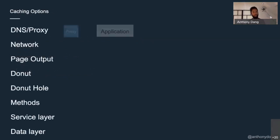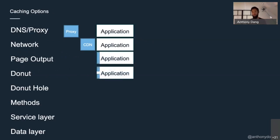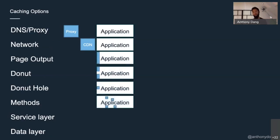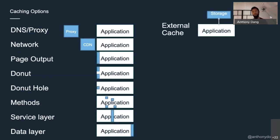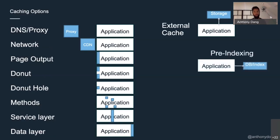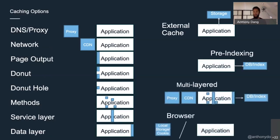Here are some caching options: you might want to cache at the proxy level, something like Cloudflare; maybe a CDN; maybe cache at the application where you provide HTML and rendering; maybe cache everything except something; or just some bits of rendered HTML. Maybe dot your program with cache around methods, or an entire service layer, your data access layer, external to your application, some pre-indexing, a multi-layered solution, or browser cache.